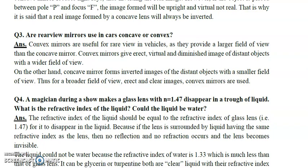Question number three: Are rear-view mirrors in cars concave or convex? We know that cars use a convex mirror because we need to see a wider range over a longer view. A convex mirror gives an erect, virtual image and shows distant objects. A concave mirror gives an inverted image and a narrower view. Convex mirrors provide a broader, erect, and clear image — so we use a convex mirror.